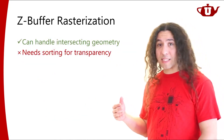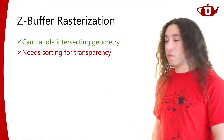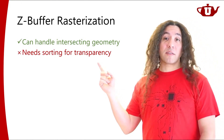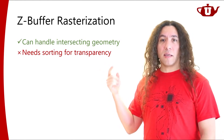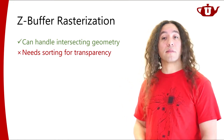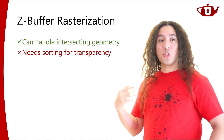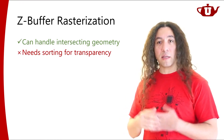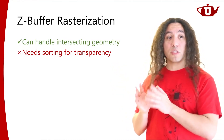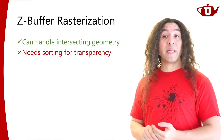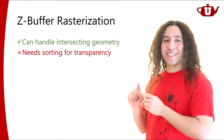To summarize: Z-buffer rasterization can handle intersecting geometry just fine, solving the problem the painter's algorithm suffered from. But it has trouble with visibility when it comes to semi-transparent primitives — we call that the visibility problem. It needs sorting for transparency, just like the painter's algorithm. There are GPU methods for order-independent transparency that get around Z-buffer rasterization, which brings us closer to A-buffer rasterization.